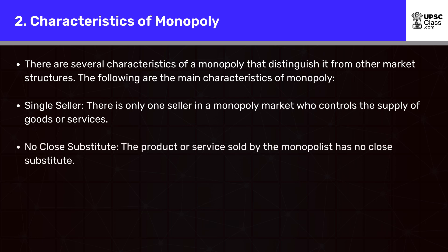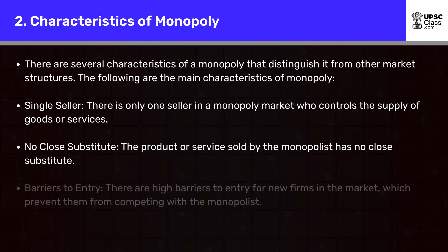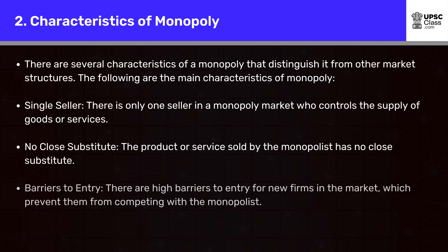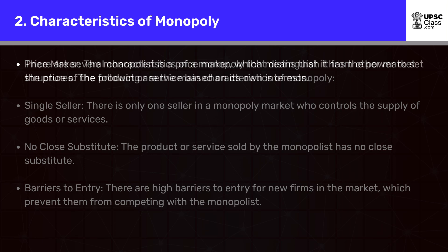No close substitute: the product or service sold by the monopolist has no close substitute. Barriers to entry: there are high barriers to entry for new firms in the market, which prevent them from competing with the monopolist.